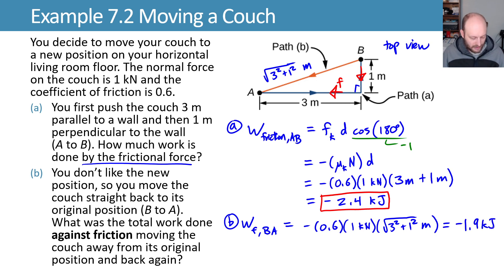We can add those together and say that the work done by friction on net is going to equal the work done as we moved it from A to B plus the work done by friction as we move it back from B to A. We add the negative 2.4 and the negative 1.9, and that gives us negative 4.3 kilojoules.